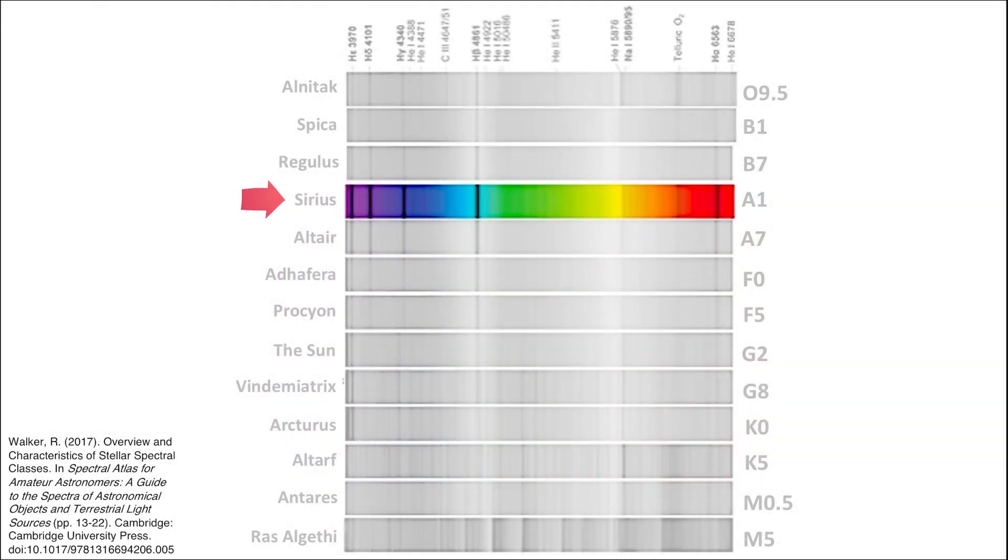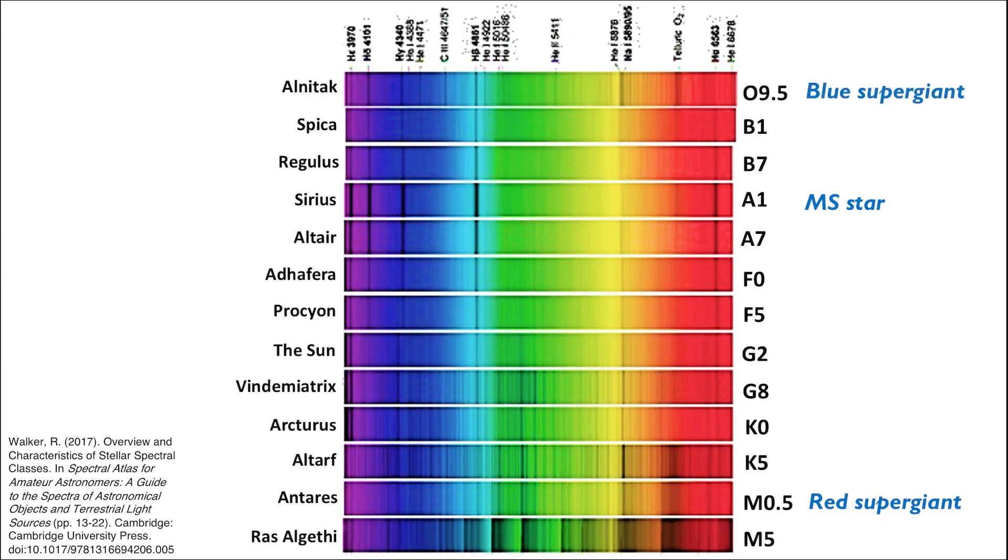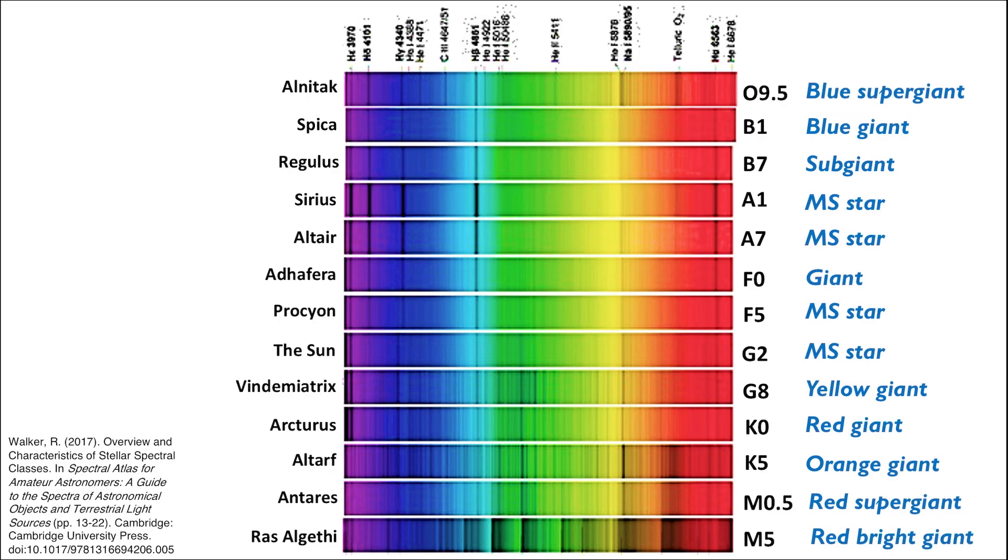Just like the spectra of Vega and Deneb from before, we can also see here that the spectral lines of Sirius, a main sequence star, are wider than those of Antares, a red supergiant. You can pause the video here to take a closer look at the spectrum of each star and see how it correlates to the type of star associated with it.